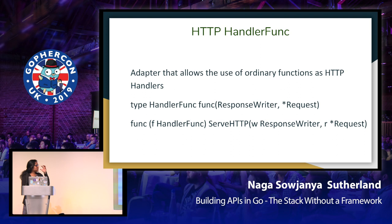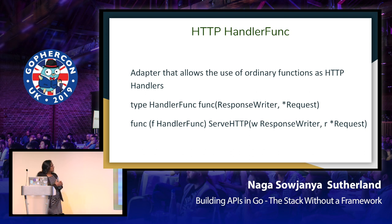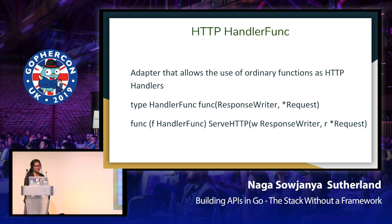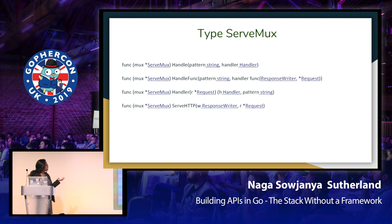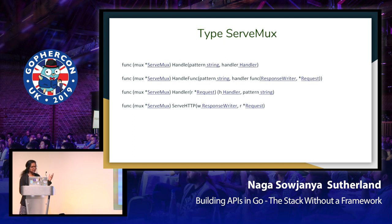The next set of slides cover very fundamental types and methods. Let's start with HTTP HandlerFunc from the net/http package — this type allows the use of ordinary functions as HTTP handlers. Next is type ServeMux, an HTTP request multiplexer. It matches the URL of each incoming request against a set of registered patterns, and it has a number of methods: Handle, HandleFunc, Handler, and ServeHTTP.